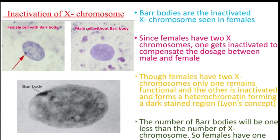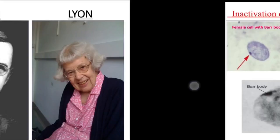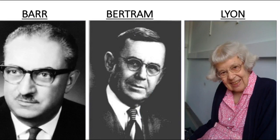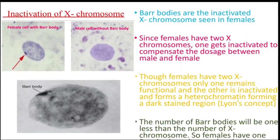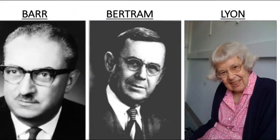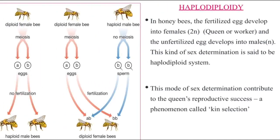The heterochromatin region does not have functional genes, whereas the euchromatin region contains only functional genes. The number of Barr bodies is one less than the number of X chromosomes. For example, an XO female has no Barr body, while an XXY male has one Barr body.